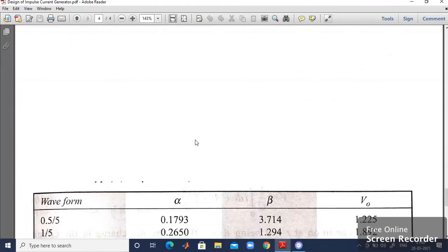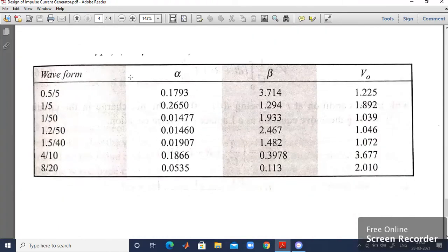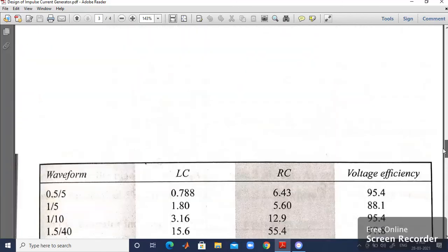Likewise table 2, if I look at the table 2, you will be getting the waveforms then alpha, beta and output voltage. So these are the information which you will be getting from table 1 and table 2. This will also help you out for solving the problems related to impulse current generator. Let us go back to the design of impulse current generator.